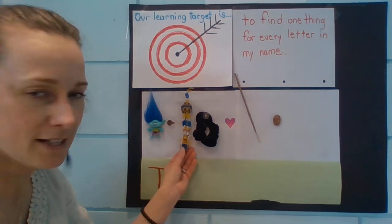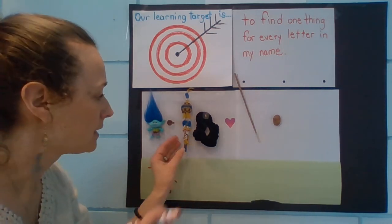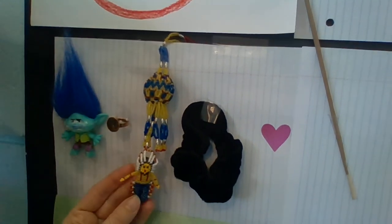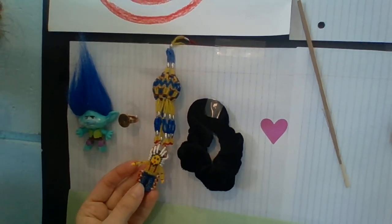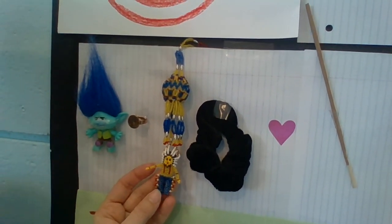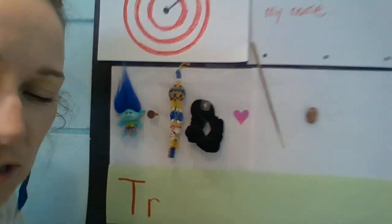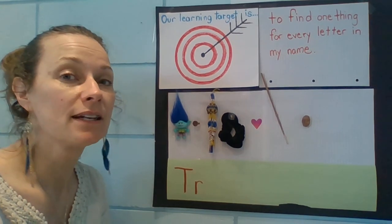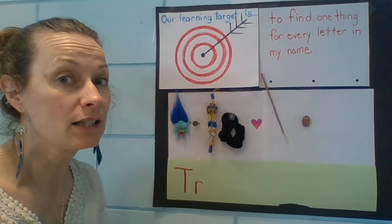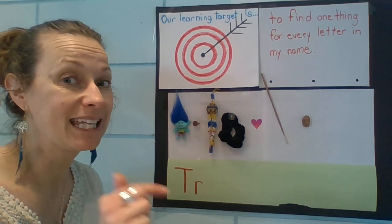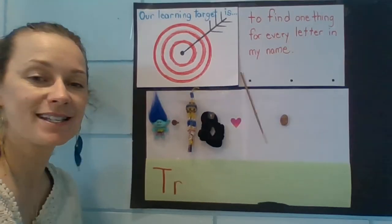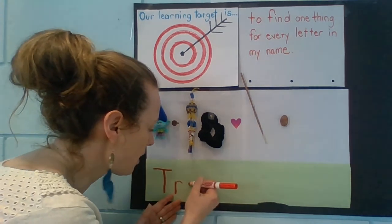Now this little one — can you see that? It's a little beaded artwork that I got. It's a little indigenous person. And it starts with a vowel — it starts with I, like igloo. And 'inside' — I. That's the letter I. So T-R-I.